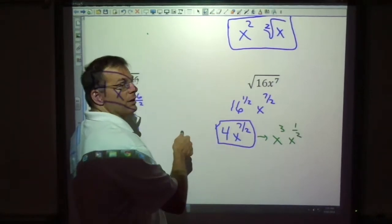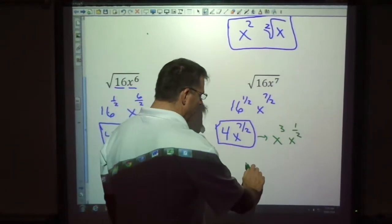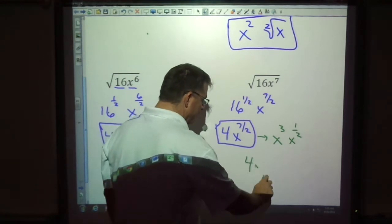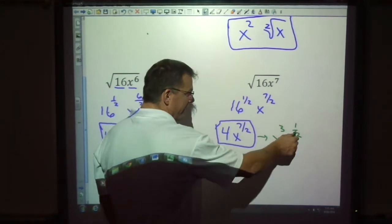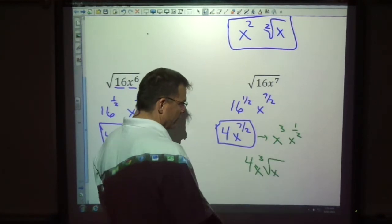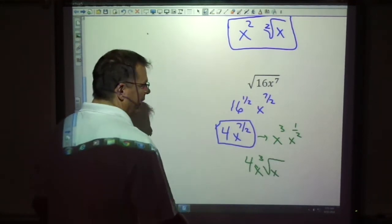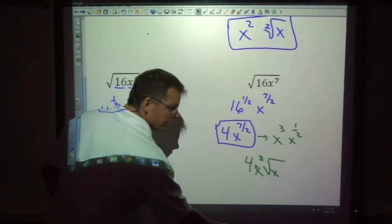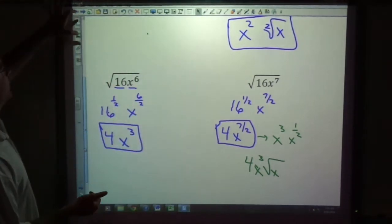Two goes into seven three times with one left over. So if we were asked to put it in radical form, we would write it four x to the third, which is all plain. And then this is the only part that would need to be in the radical. So I wanted to clarify that. It depends on what the directions are asking, but that's kind of how we can work with the back and forth.